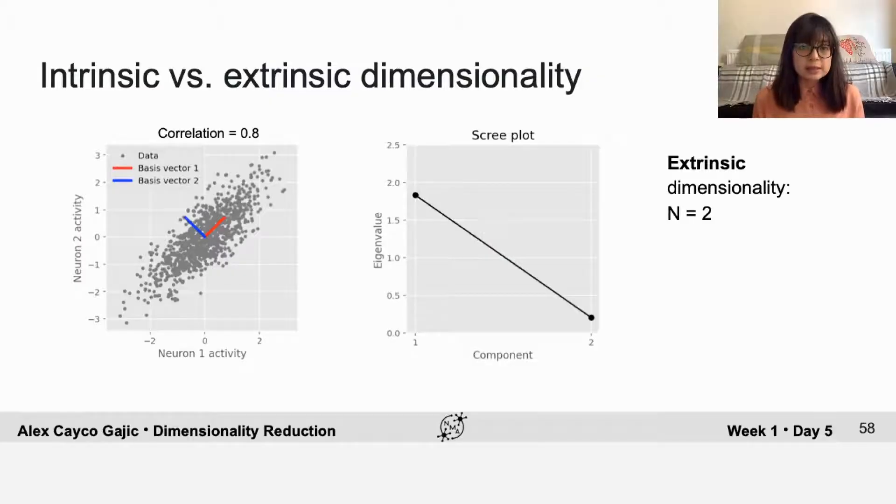But typically, we see something that's in between. So here we have most of the variance in the first direction, but there's a little bit of variation in the second basis vector as well. In the scree plot, you can see that because the second component is not zero, but it's much smaller than the first component.